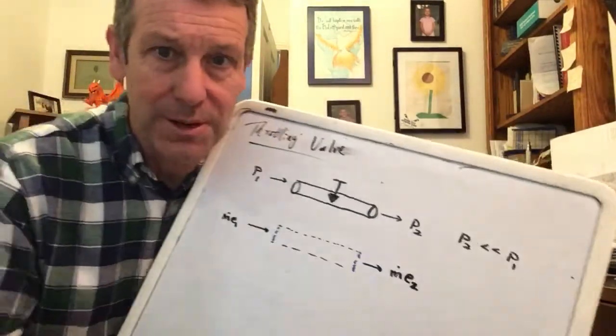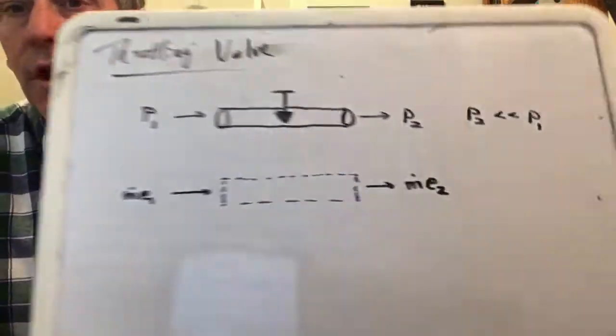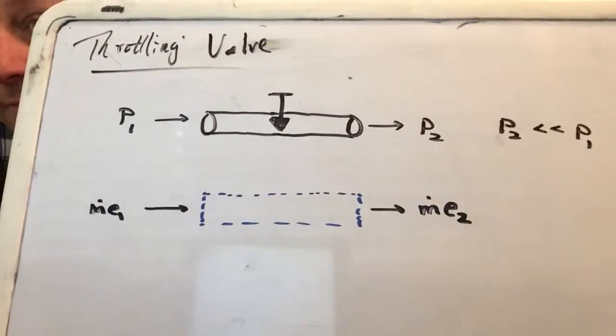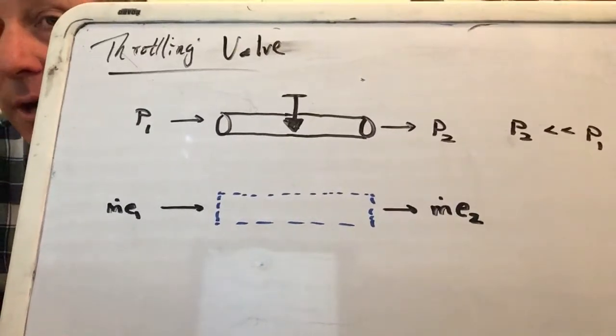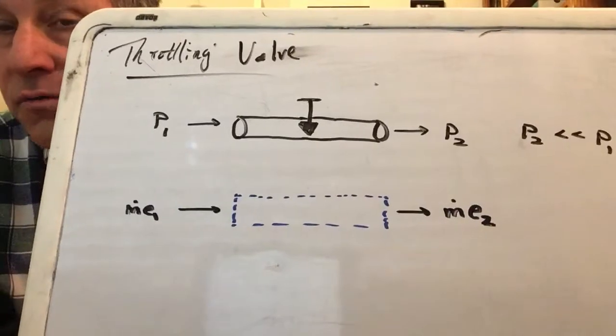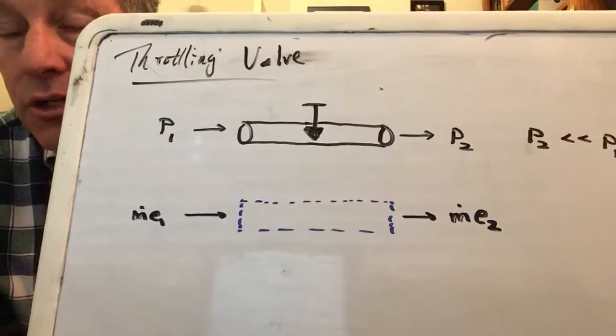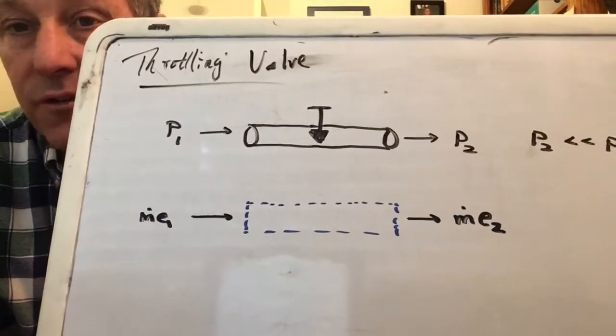All right, we're back. So that blue box represents my control volume, it represents the throttling valve. For sure I have energy coming in with mass and energy coming out with mass.